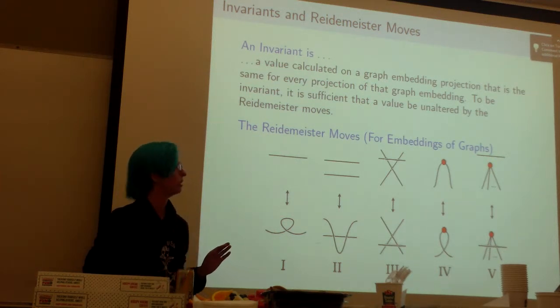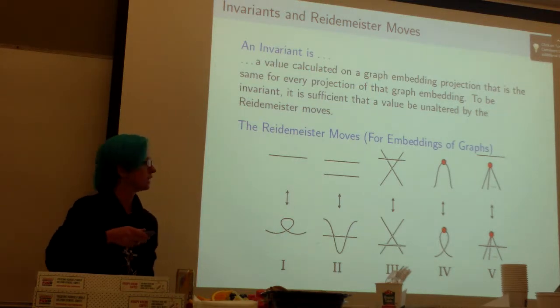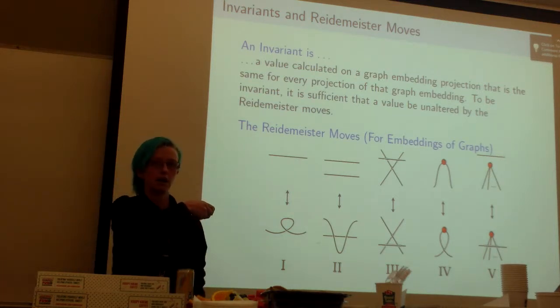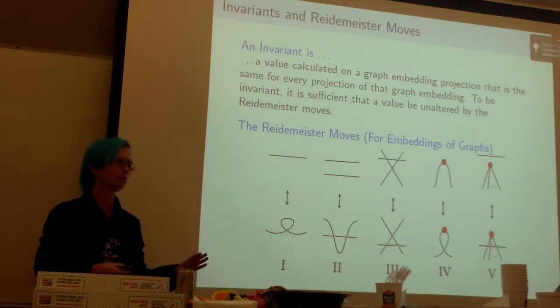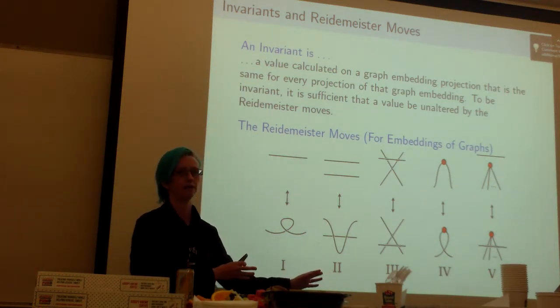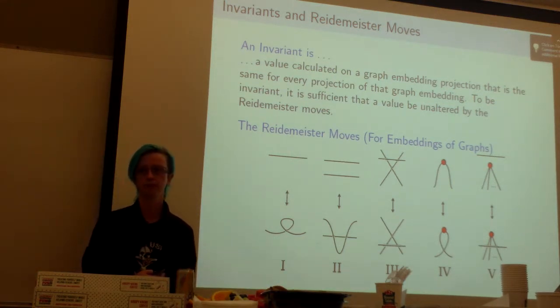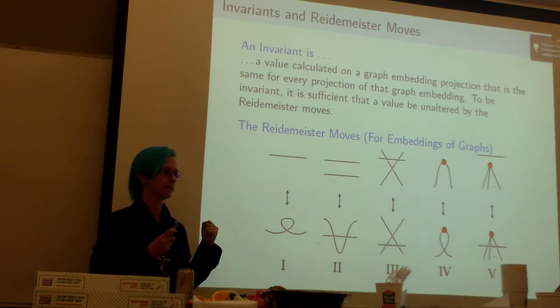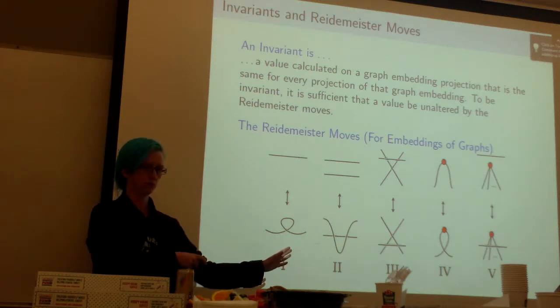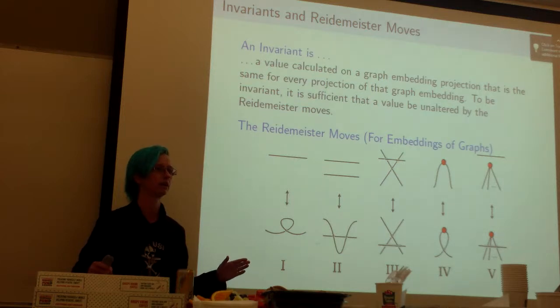What Reidemeister showed, actually in the early 1900s, was that if you take just a small set of operations that you could do on one of these projections, you can get from any projection of a graph embedding to any other projection just by doing these over and over. So if we want to check that something is invariant, all we have to do is check that none of these moves will change it. We don't have to check every single way that you can move everything, we just have to check these.